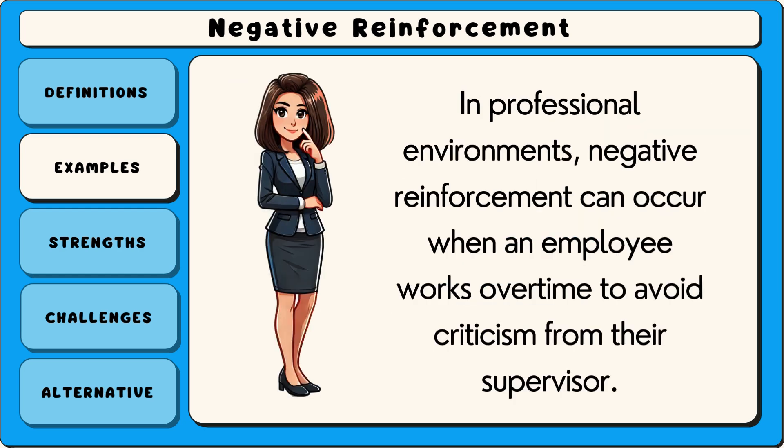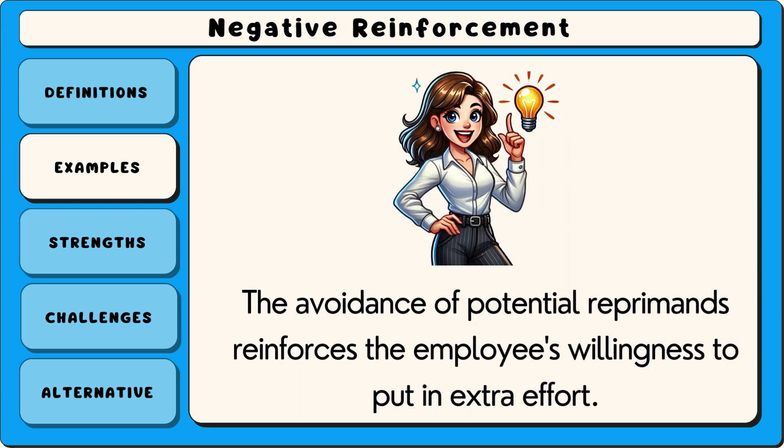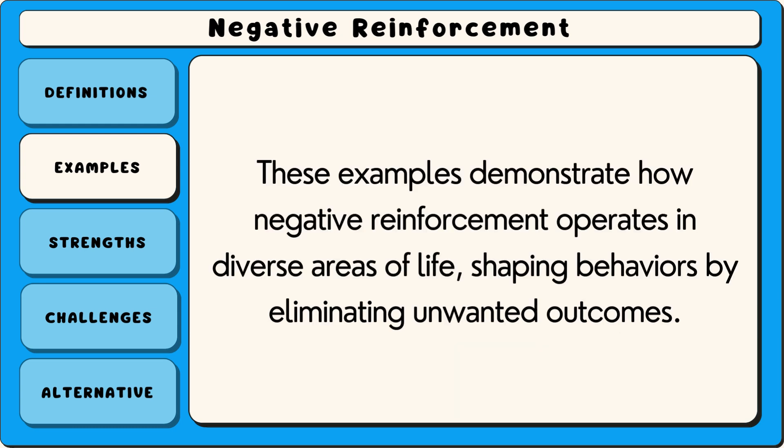In professional environments, negative reinforcement can occur when an employee works overtime to avoid criticism from their supervisor. The avoidance of potential reprimands reinforces the employee's willingness to put in extra effort. These examples demonstrate how negative reinforcement operates in diverse areas of life, shaping behaviours by eliminating unwanted outcomes.